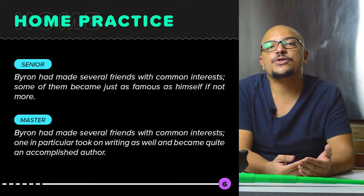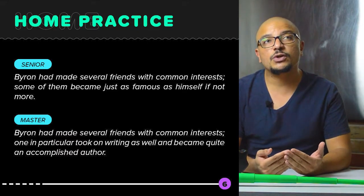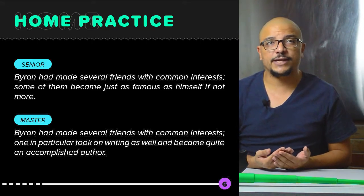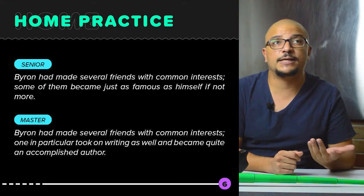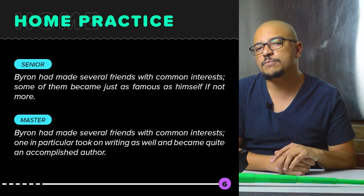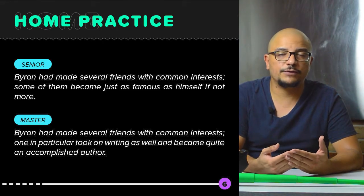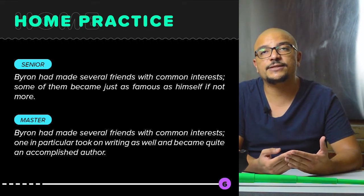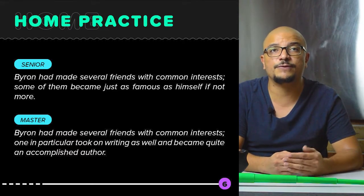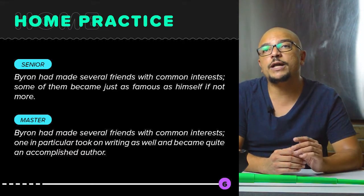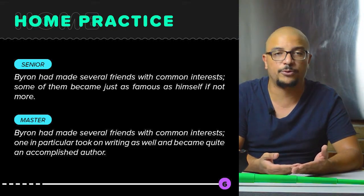Senior, you're going to create a short story involving Lord Byron using past perfect. For example: Byron had made several friends with common interests. Some of them became just as famous as himself, if not more. Master level: create a short story involving Lord Byron using past perfect, accessories, and language chunks. For example: Byron had made several friends with common interests. One in particular took on writing as well as became quite an accomplished author, alright?